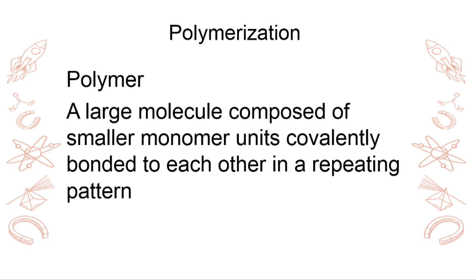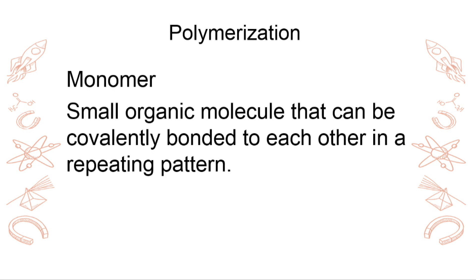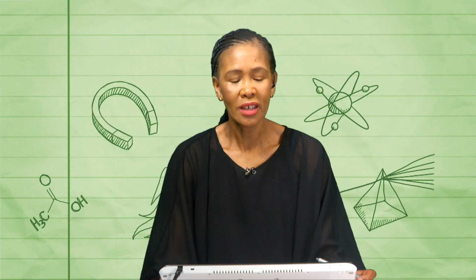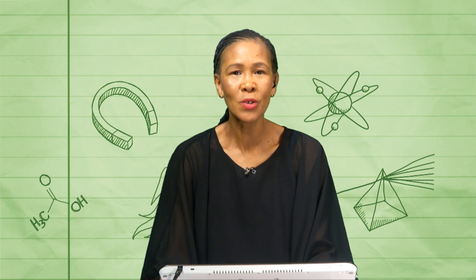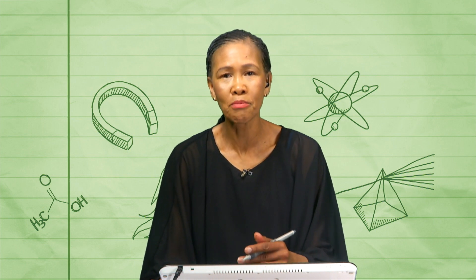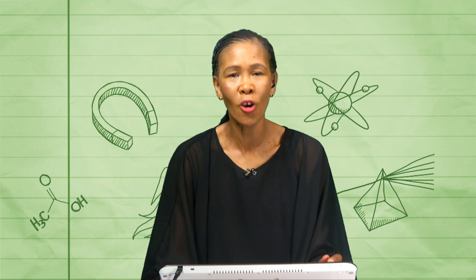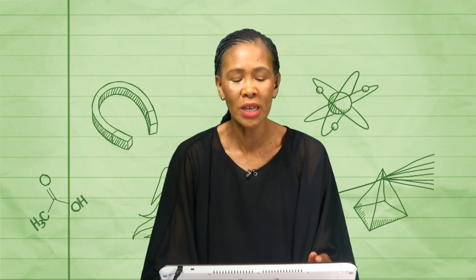What is a polymer? A large molecule composed of smaller monomer units, covalently bonded to each other in a repeating pattern. And what is a monomer? It is a small organic molecule that can be covalently bonded to each other in repeating patterns. When you say 'mono', it means one; when you say 'poly', we are talking about many. Many monomers will give you polymers.